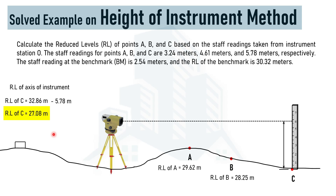This is how the reduced levels of various points are calculated when staff readings, instrument location, benchmark reduced level, and benchmark staff reading are all given — using the height of instrument method. In the next video, we will solve the same example using the rise and fall method and compare the results. Thank you for watching.